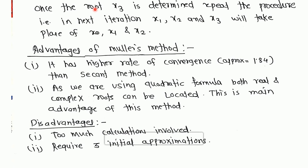Once the root x3 is determined, repeat the procedure in the next iteration, that is x1, x2, and x3 will take the place of x0, x1, and x2. In this way we can determine all the iterations.